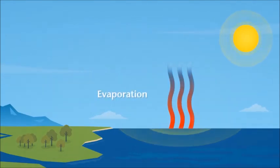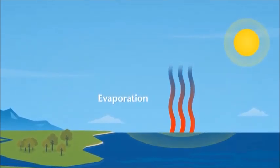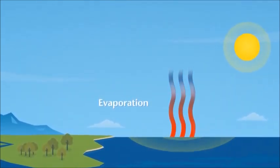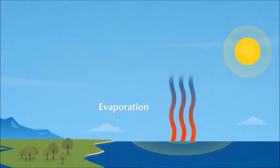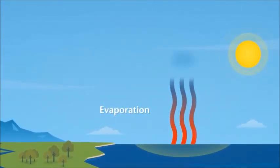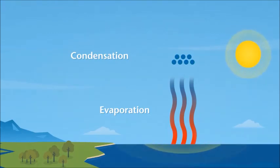Because gases are lighter than liquids, water vapour rises up into the sky. The further you move up and away from the Earth's surface, the colder the temperature gets. So in the sky, the water vapour cools and changes back into tiny water droplets. This change is called condensation and is the opposite of evaporation.